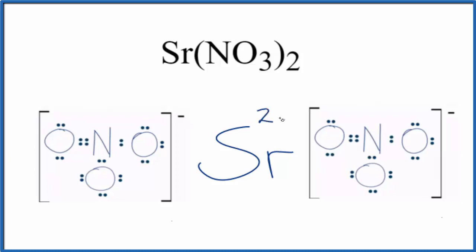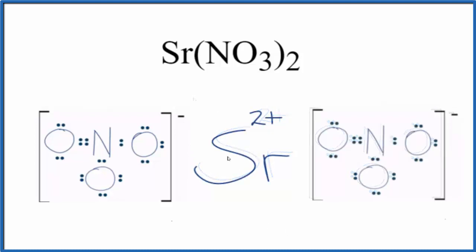So we call this a two plus ionic charge. We have brackets around the nitrate ions to show that the electrons were transferred from the metal to these polyatomic ions — a group of nonmetals. Sometimes you'll see brackets around the positive ion as well. Because we have the positive ion and these negative ions attracting each other, that forms our ionic bond.